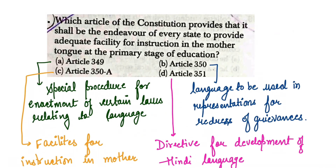Which article of the Constitution provides that it shall be the duty of every state to provide adequate facilities for instruction in the mother tongue at the primary stage of education? This is the part of the Constitution which says that every state should provide these facilities in the mother tongue so that primary education can be provided in the mother tongue. We have four articles here.